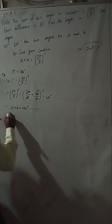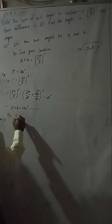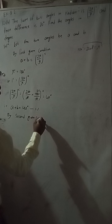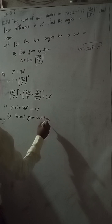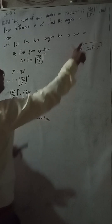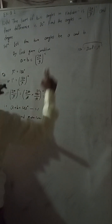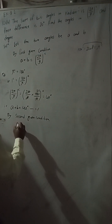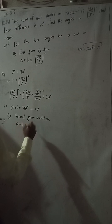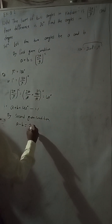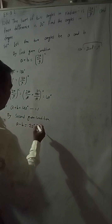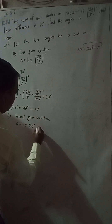By the second given condition, their difference equals 20 degrees. So A minus B equals 20 degrees. This is equation 2.